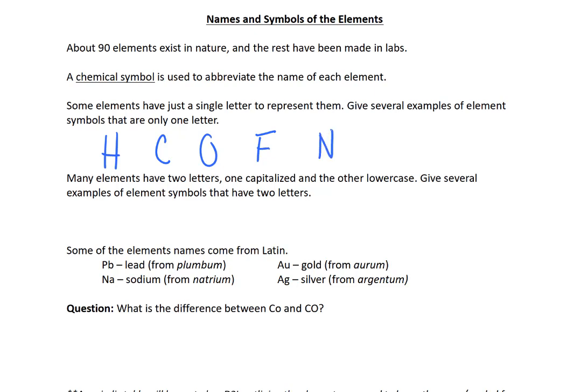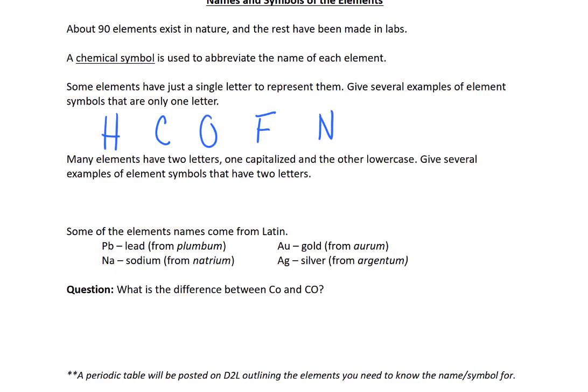What you'll start to notice is that's not enough because there are a lot of elements that start with C, like chromium, chlorine, and others. Carbon has already taken C, so we add an additional letter to distinguish. Chromium is Cr, copper is Cu, cobalt is Co, chlorine is Cl, cadmium is Cd, calcium is Ca, and cesium is Cs.